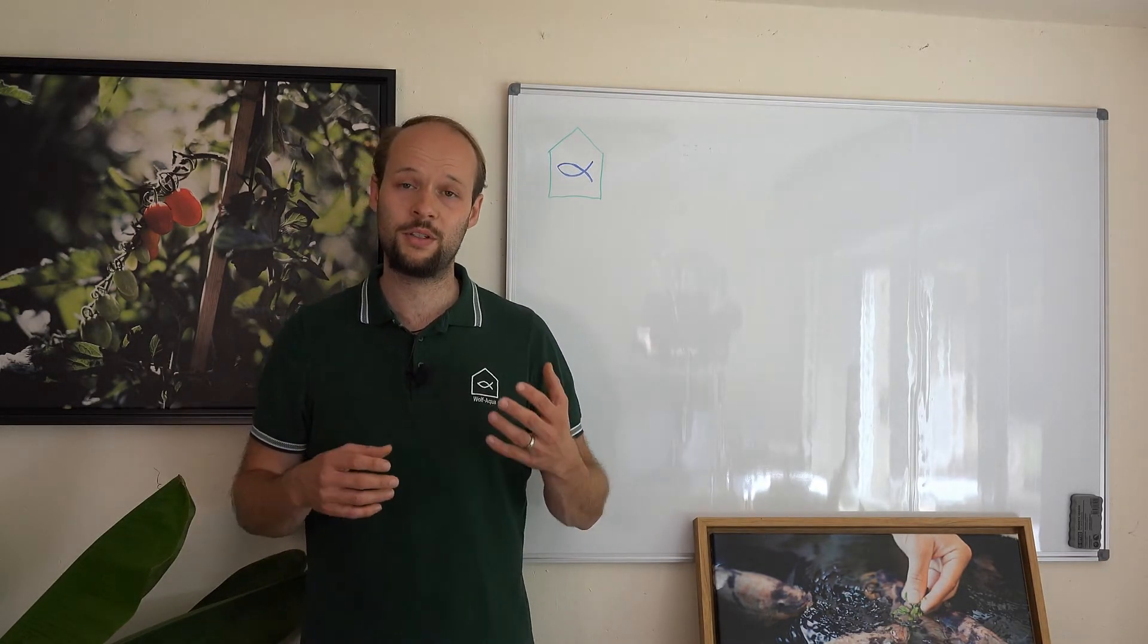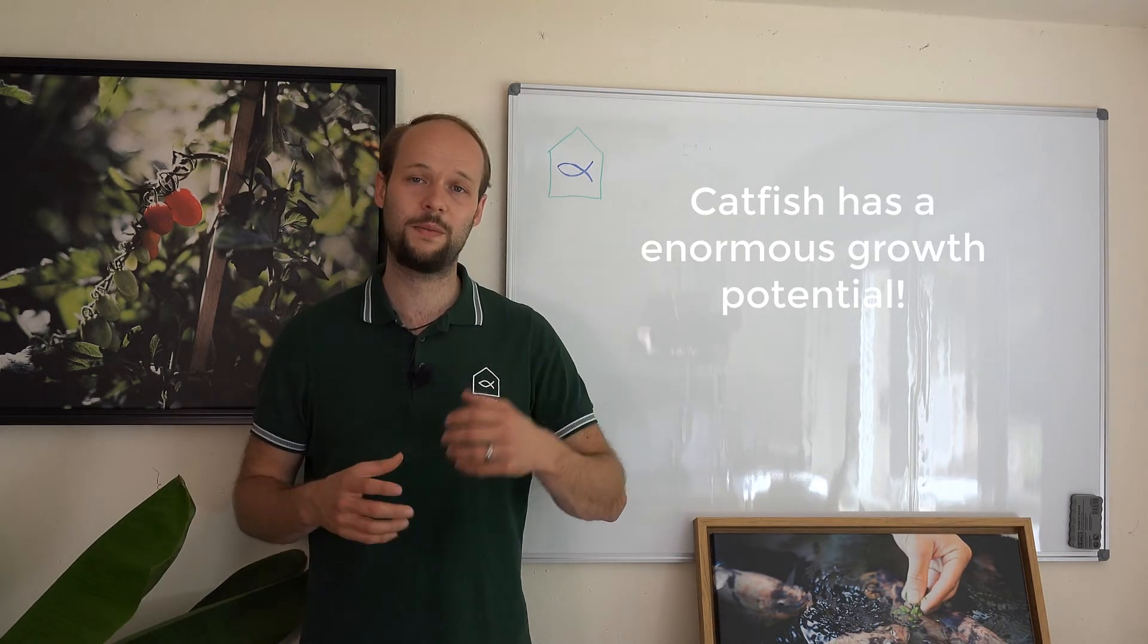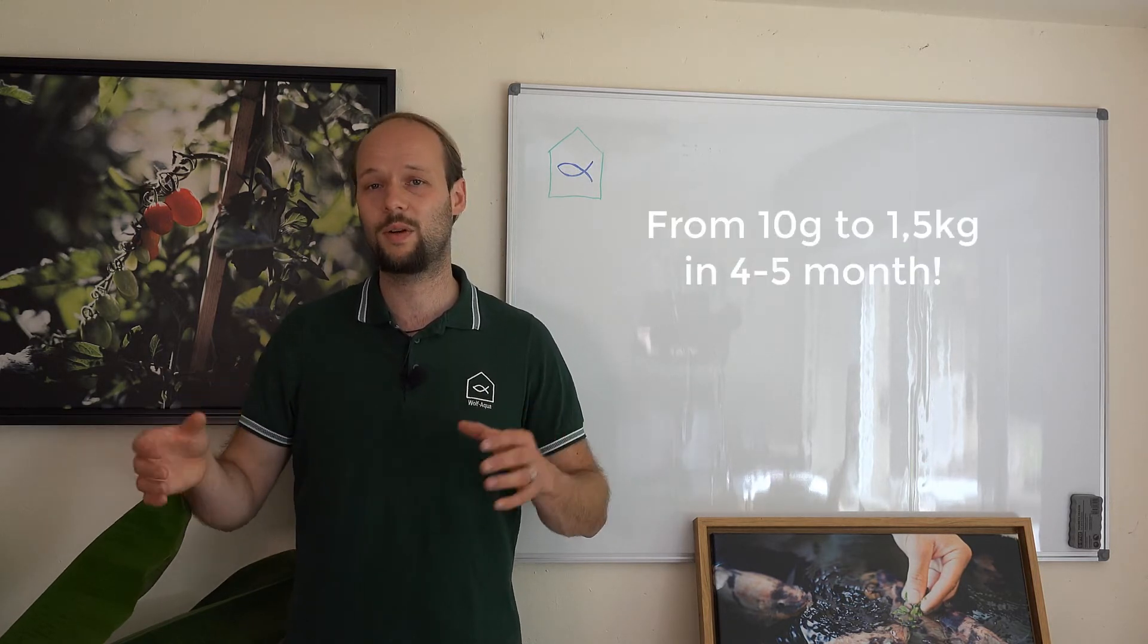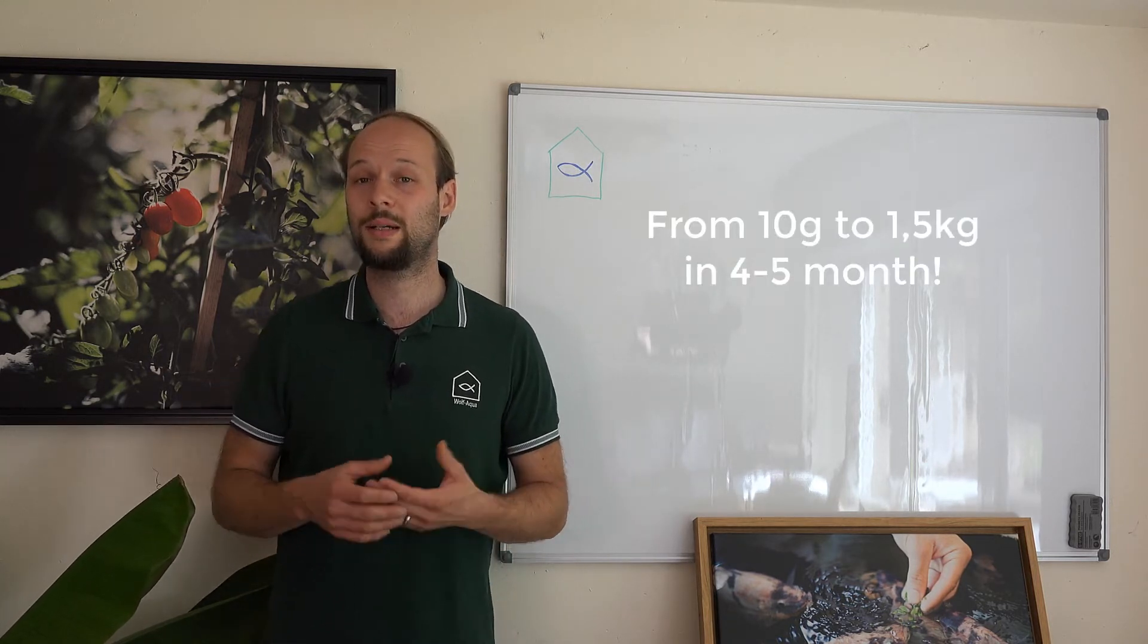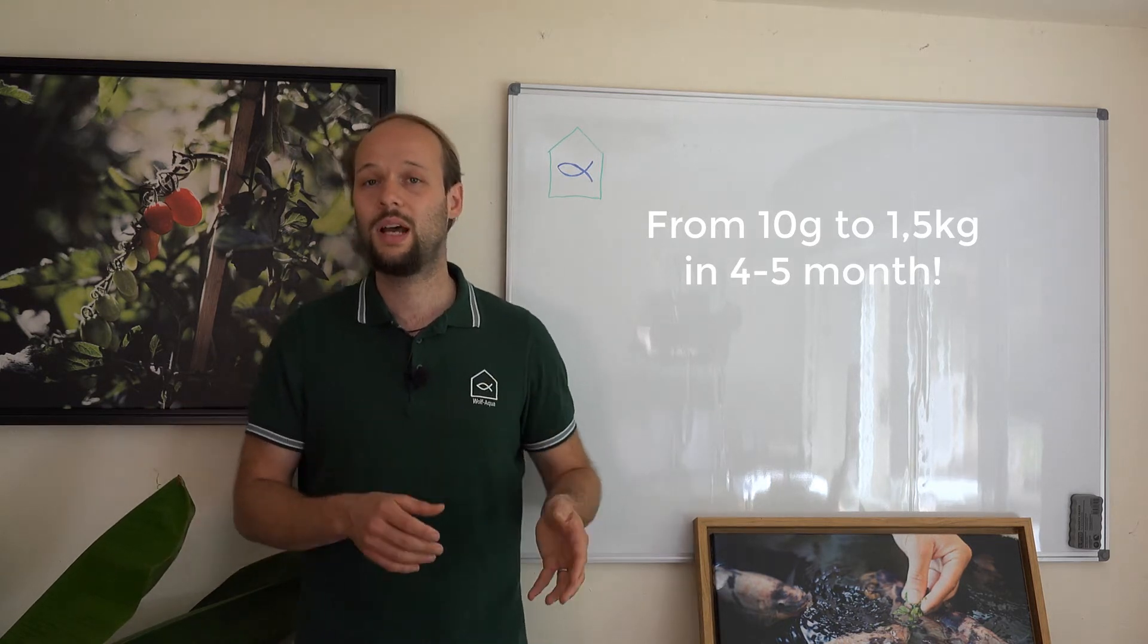So what is also special about this fish is the enormous growth potential. For example if you take a 10 gram fingerling you can make it happen that within 4 to 5 months you can grow this fish into 1.5 kg. Of course that requires temperatures between 27, 28, 29 degrees Celsius in the water and the right feed.